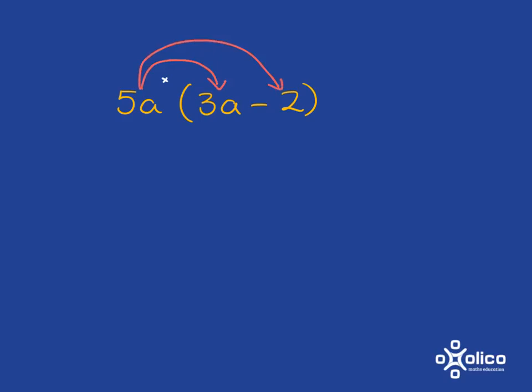5a must multiply with the 3a, and then it must multiply with the negative 2. So let's go ahead and do that. 5a multiplied by 3a: 5 times 3 is 15, and a times a is a squared. Then 5a multiplied by 2 is 10a. So we're going to have 15a squared subtract 10a.